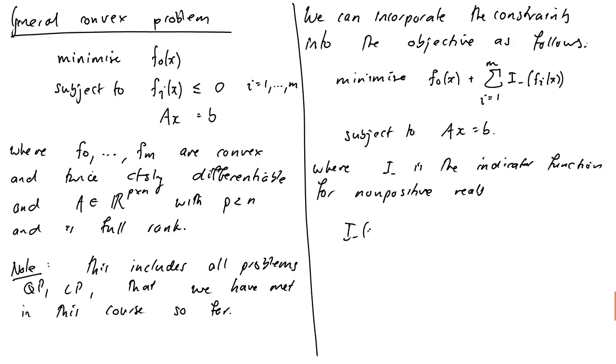In other words, i minus of u is equal to 0 if u is less than or equal to 0, and positive infinity if u is greater than 0. So you can see that unless all the constraints are satisfied, our objective has a value of positive infinity, and we definitely haven't minimized it. Okay, so this is gradually turning into a form that is a little more useful, but we're not there yet. We still can't use Newton's method, as our objective is not differentiable, obviously.